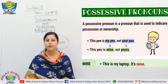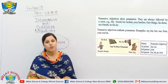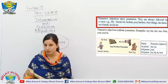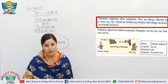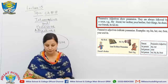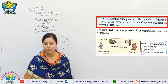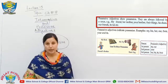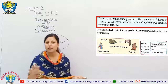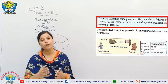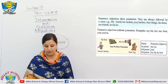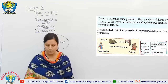See your book, page 61: possessive adjectives show possession and are always followed by a noun. For example: my friend, her mother, your father, their things, his shoes, our friends, its tail — these are all possessive adjectives, and each is followed by a noun.